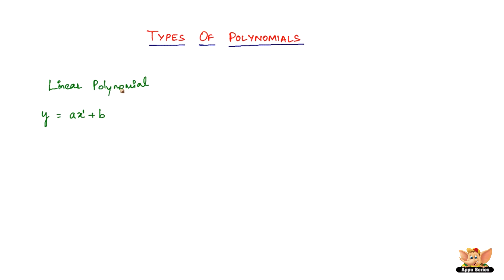Y is nothing but the solution you get when you substitute values for x. For example, if you have y equals 2x plus 3, when you give different values of x you get different values for y. If you give the value 1 for x, that makes it 5, so y becomes 5. That is the solution for this linear polynomial.